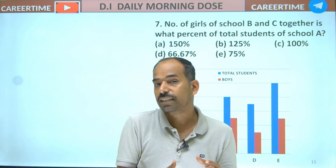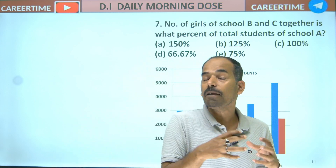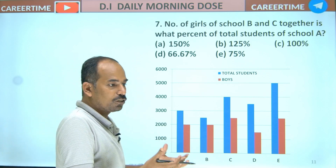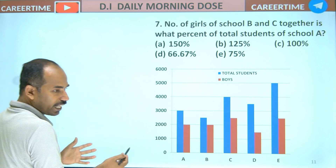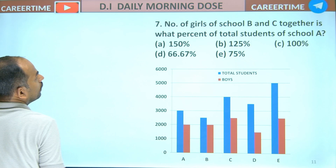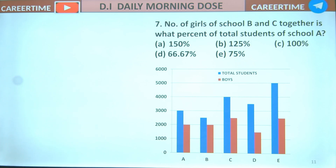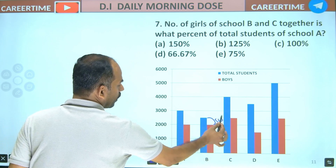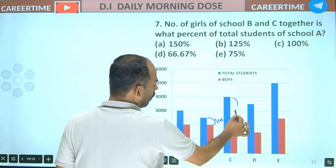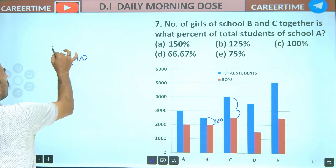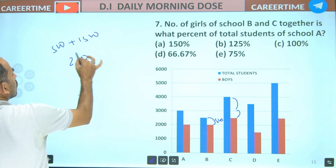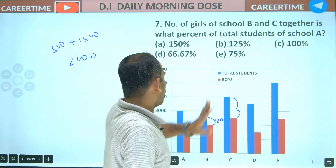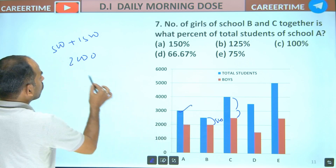The girls in school B and C together — girls in B is 1,500. So what percentage of the total number of students?